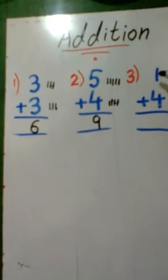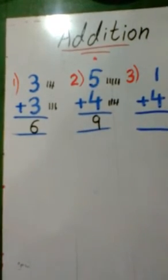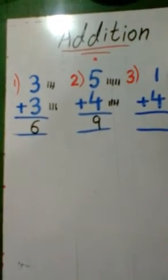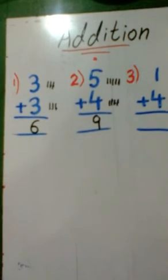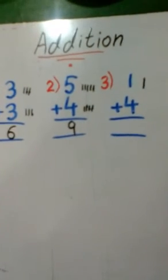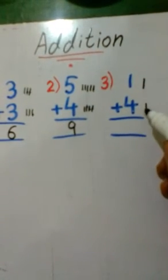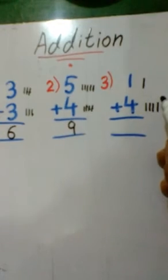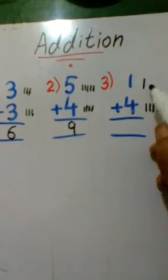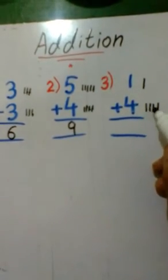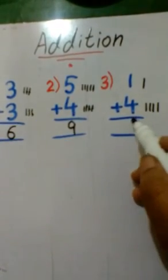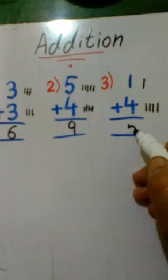Next, question 3: 1 plus 4. We draw 1 line for 1, then 4 lines for 4. Now we count all: 1, 2, 3, 4, 5. 1 plus 4 is equal to 5.